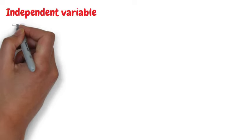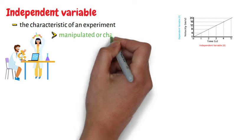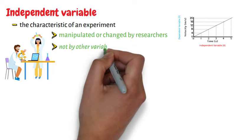An independent variable is the characteristic of an experiment that is manipulated or changed by researchers, not by other variables in the experiment.